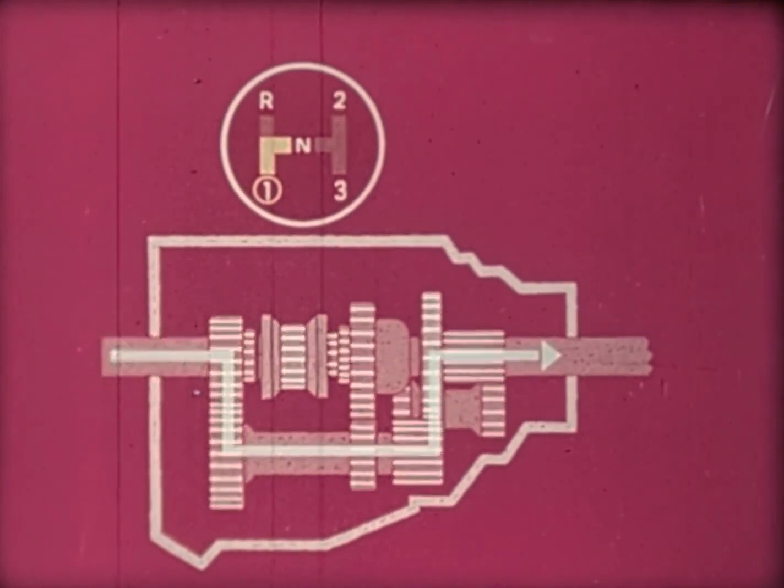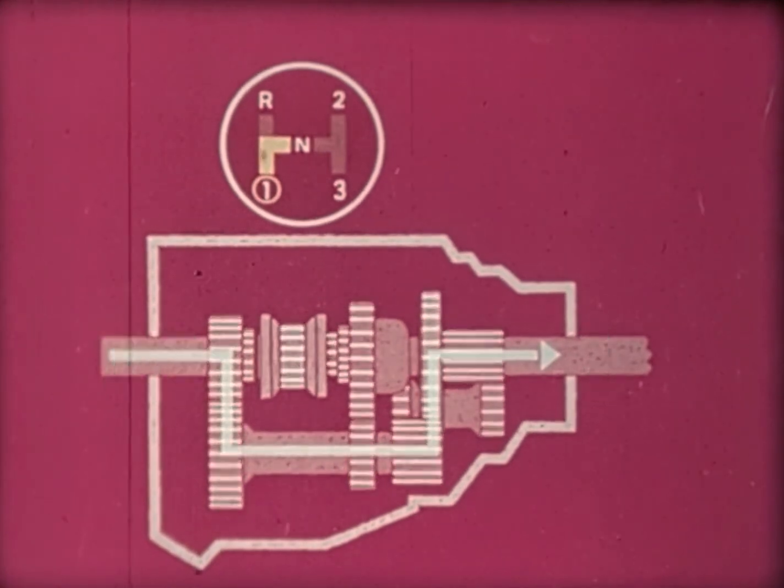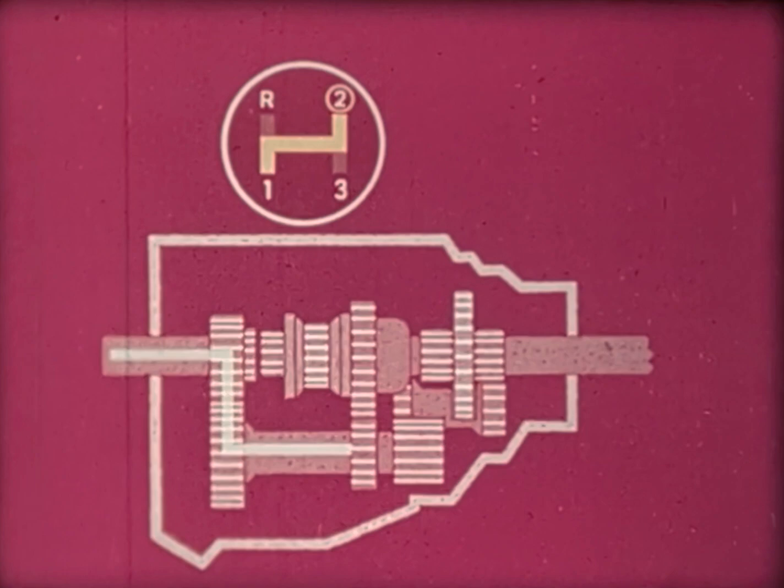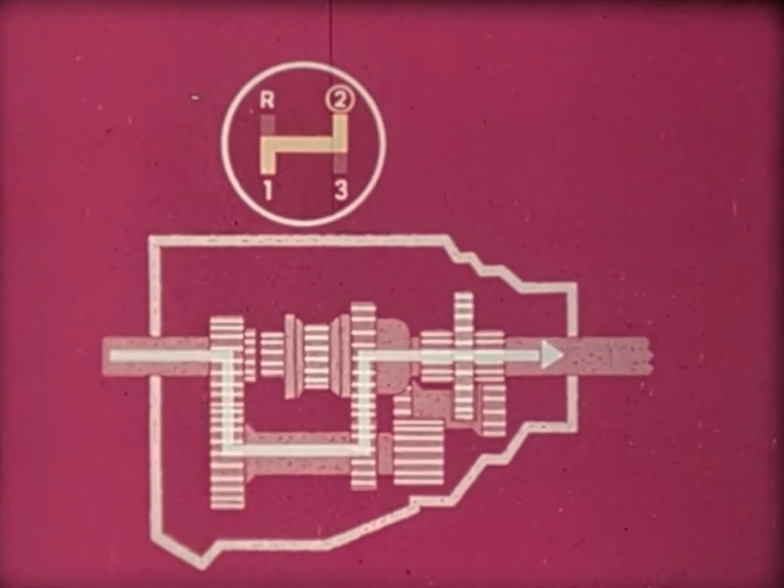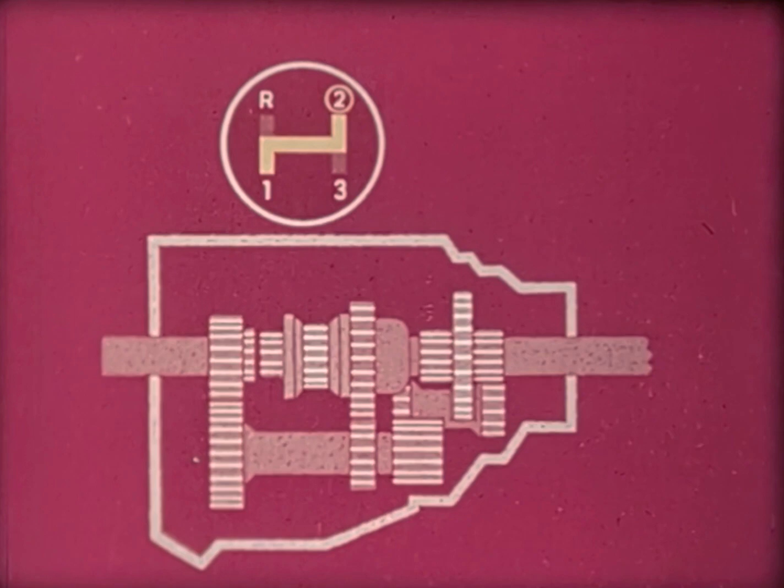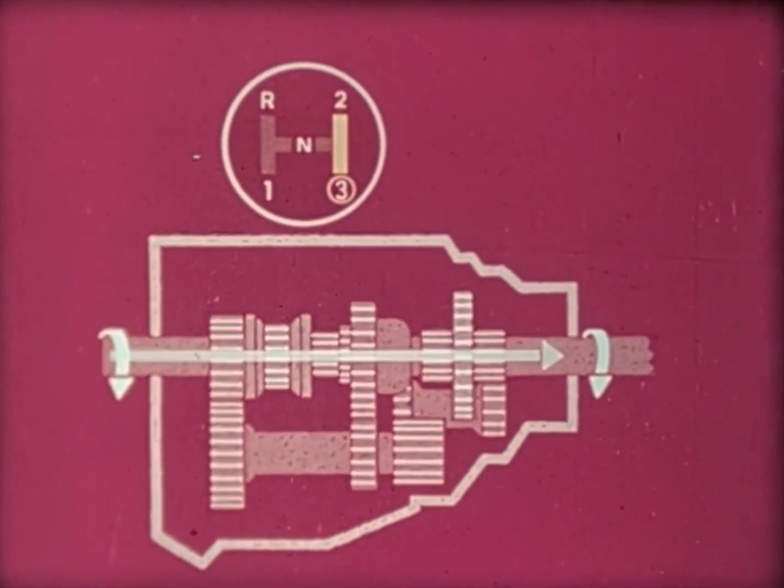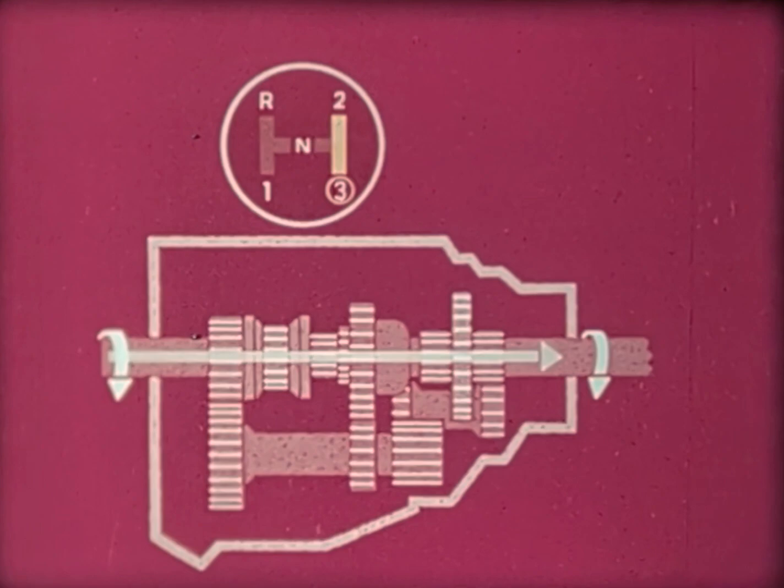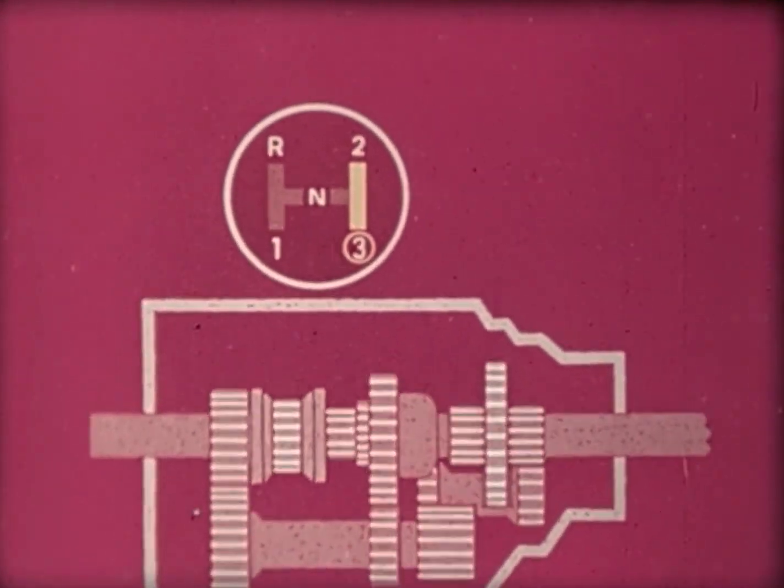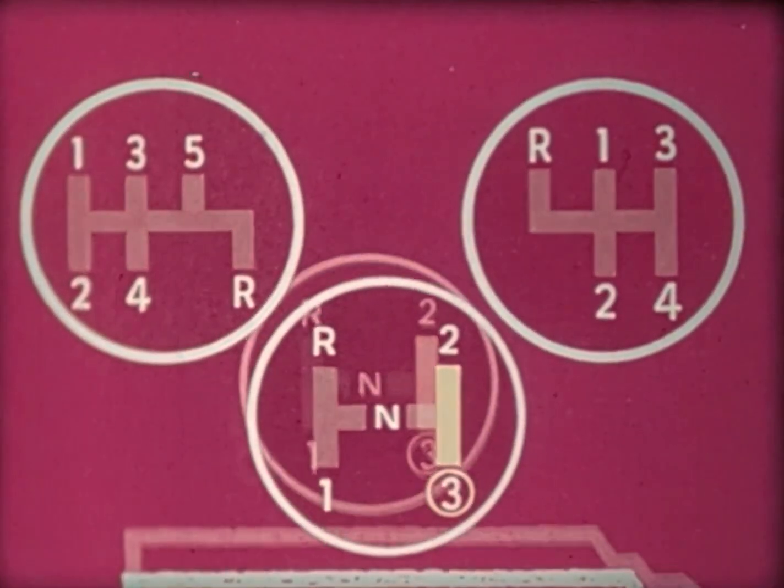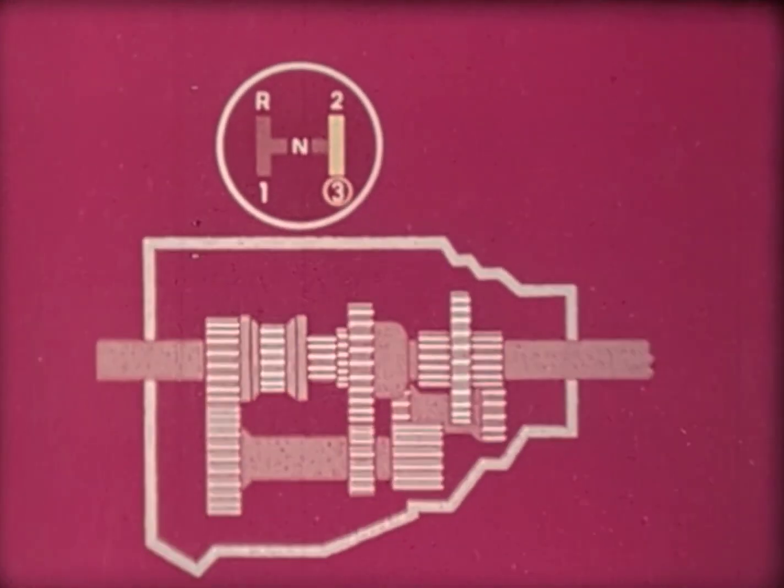In low gear, it takes about three turns of the input shaft to produce one turn of the output shaft. That lets me go fast and develop the power it takes to get the car moving. Once it's underway, the gears can be shifted to second, which operates with about two input turns to one output turn. In high or third gear, it's input one turn, output one turn.